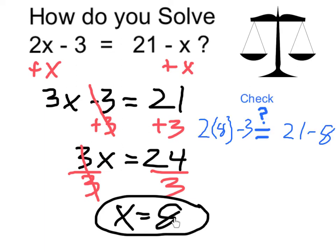Now I can check that this is correct by taking 8 and plugging it into both sides for x of the original equation and making sure it's true. 2 times 8 is going to be 16. 16 minus 3 is equal to 13. And 21 minus 8 is also equal to 13, so it does check out.